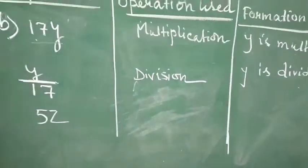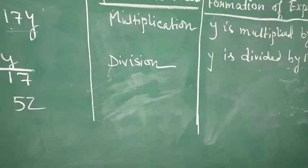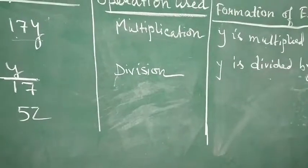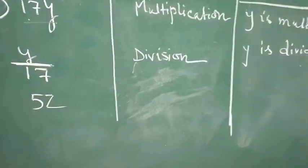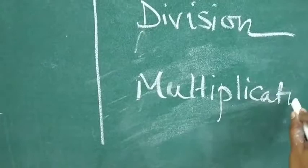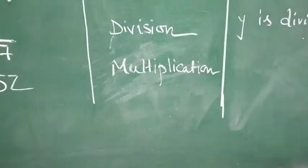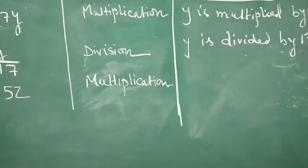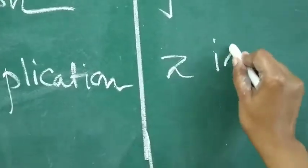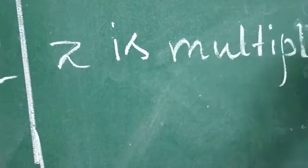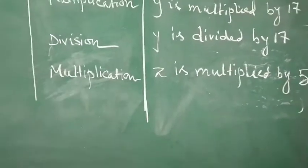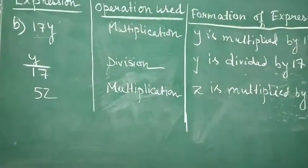Now, in the next one, we have 5z. 5z means 5 into z. So, which operation is used here? It's multiplication. So, we will write multiplication here. And we will write how it is formed. It is z is multiplied by 5. So, this is our question number B.